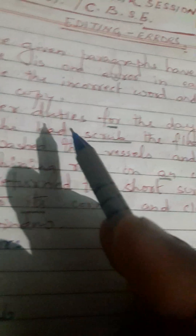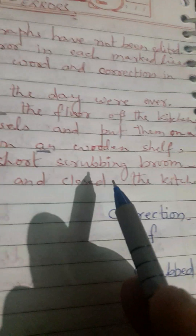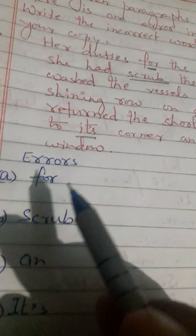Paragraph 2: Her duties for the day were over. She had scrubbed the floor of the kitchen, washed the vessels and put them on a shining row on an wooden shelf. Return the short scrubbing broom to its corner and closed the kitchen window.